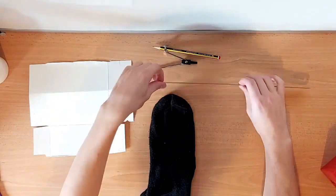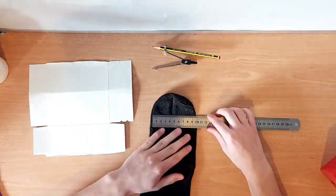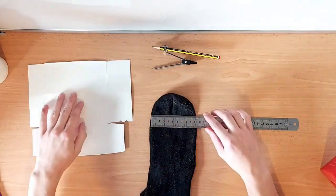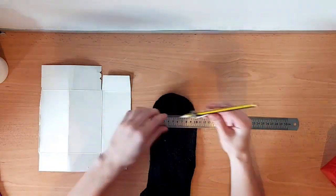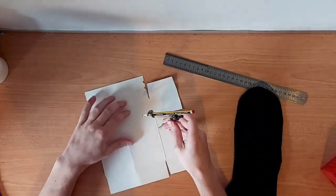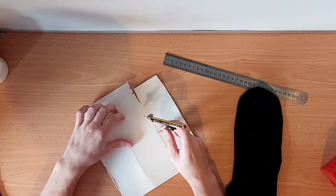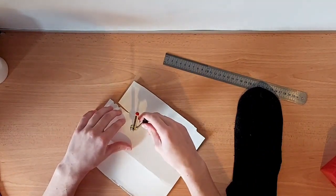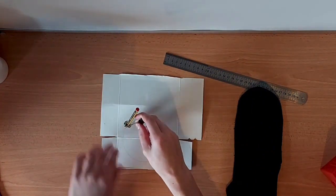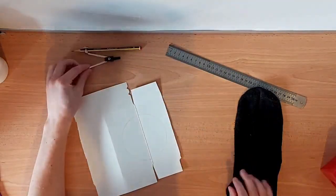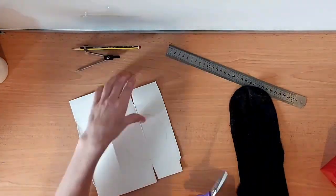The first thing that you're going to have to do is to measure the width of the sock. So my sock is about 10 centimeters wide. Now you're going to draw a circle on the cardboard that is the same width as the sock. I'm going to do this using a compass, but if you do not have a compass you can do this by finding an object that is roughly the right size and draw around it.